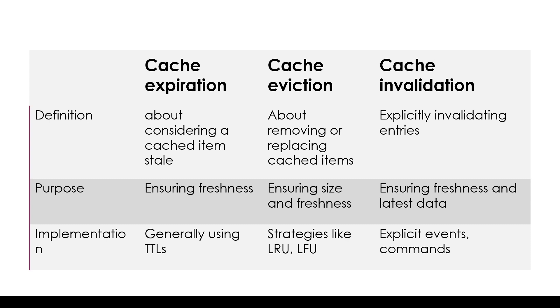In the case of cache invalidation, rather than waiting for data to naturally expire, the application generally sends a command or method call to the caching layer to invalidate a specific cache entry or subset of data. The entries are then invalidated and refreshed or refetched when requested next.